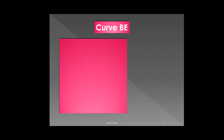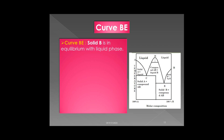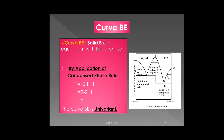The second curve is curve BE. On curve BE, solid B and liquid are present — these two phases are in equilibrium. Applying the condensed phase rule: F = C − P + 1 = 2 − 2 + 1 = 1. The degree of freedom is 1, so the system is univariant.